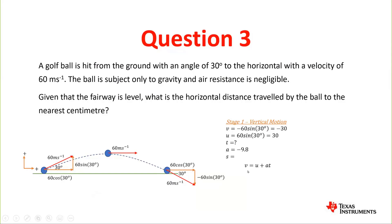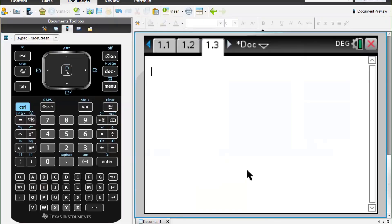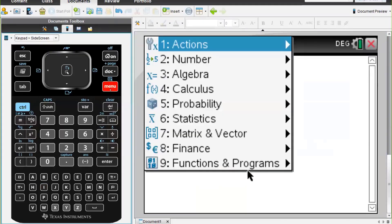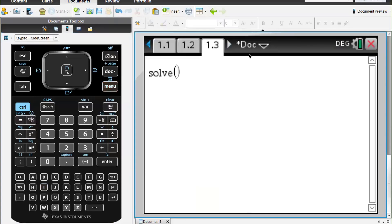So we're going to go menu, algebra, solve. Our final velocity was -30 and that was equal to our initial velocity which was 30, minus 9.8t, and we're solving for t. We find that that took 6.12 seconds, which was the time of flight.